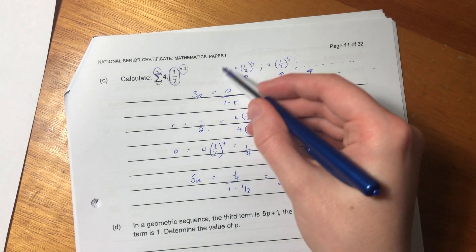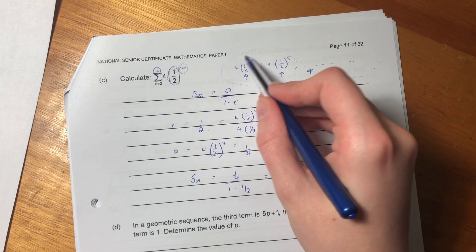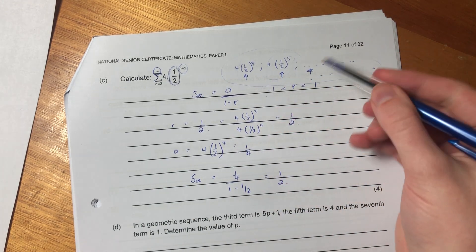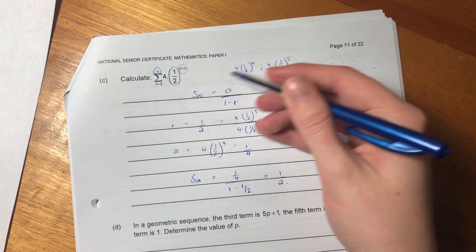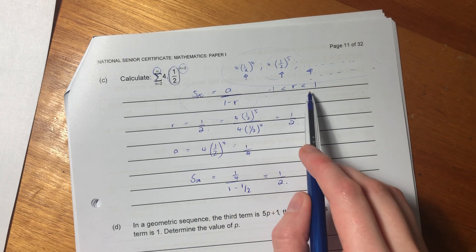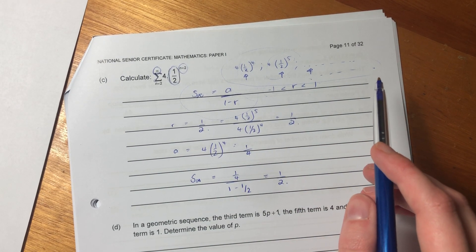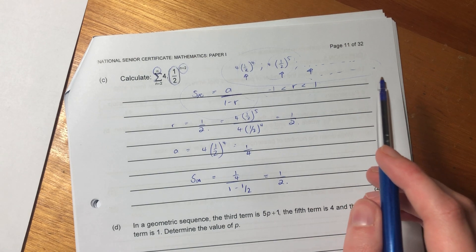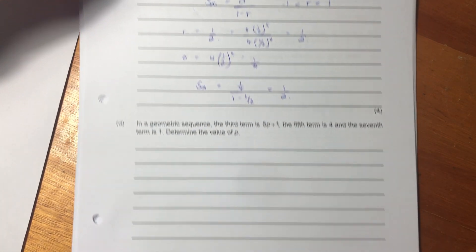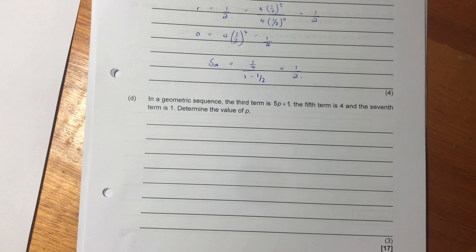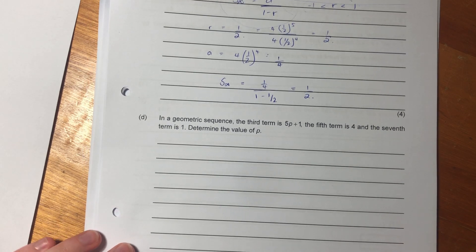It's very important to write it out like this. Make this the first term. Make that the second term and then work with the sum to infinity formula given that our ratio was within our restriction. So that's that. Let's now go on to, I think it's our last question for this, for this specific sequences and series question. Let's now see what it says.